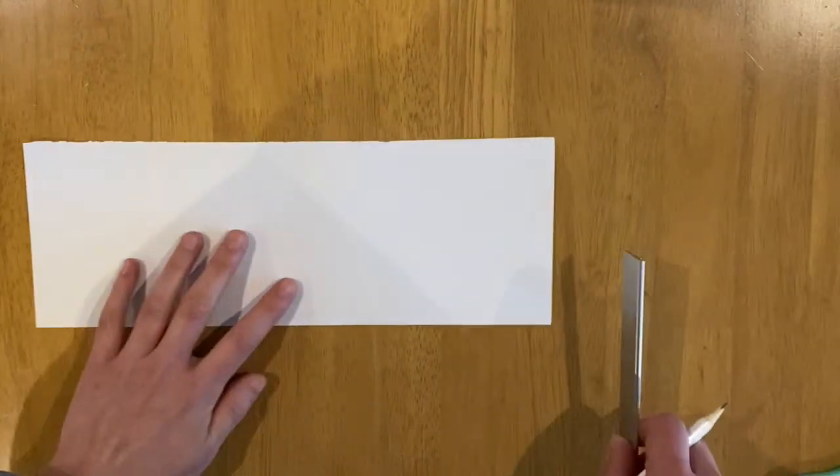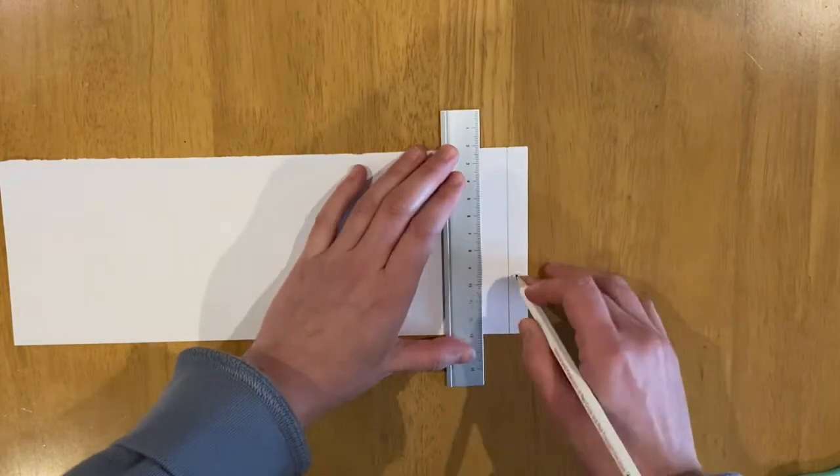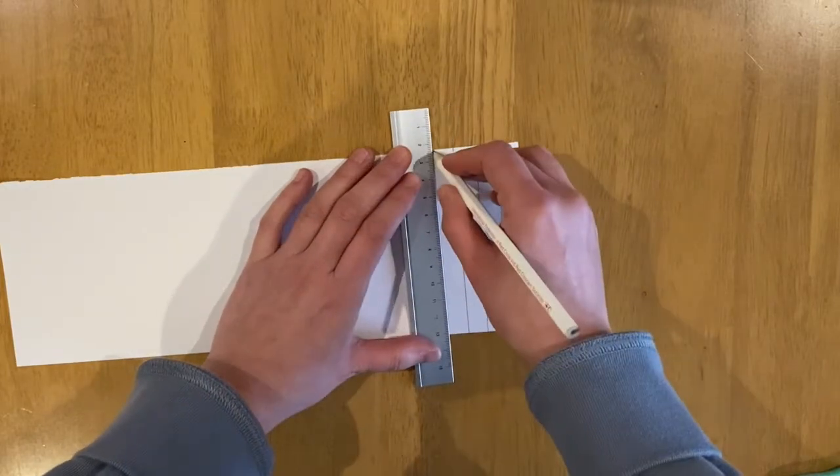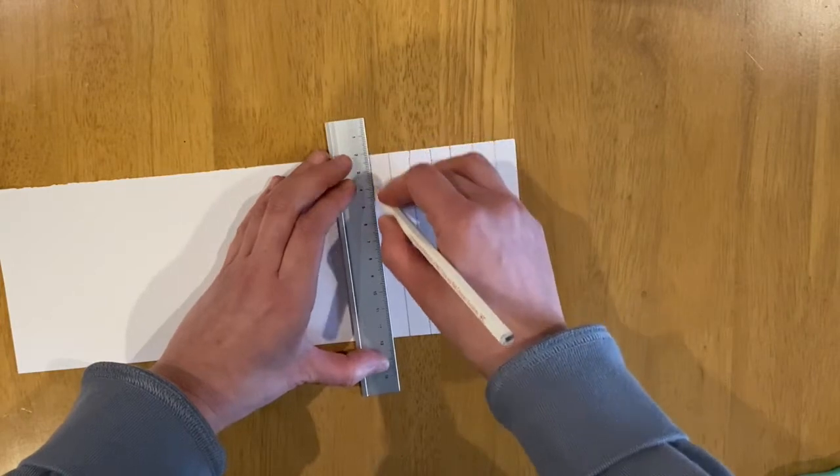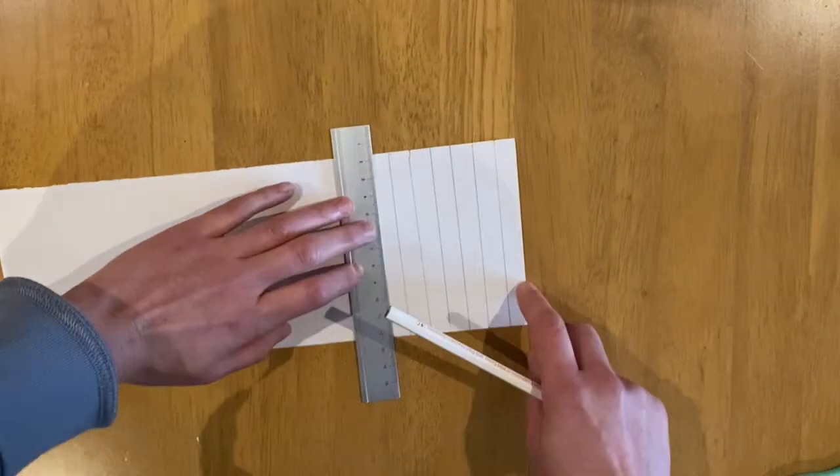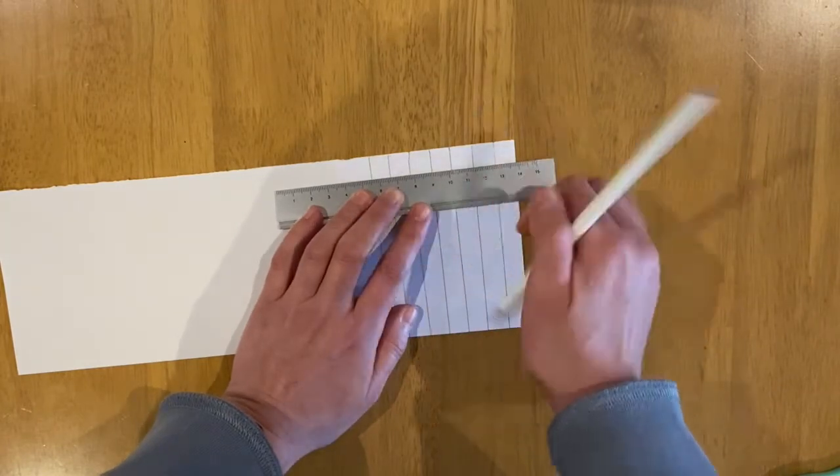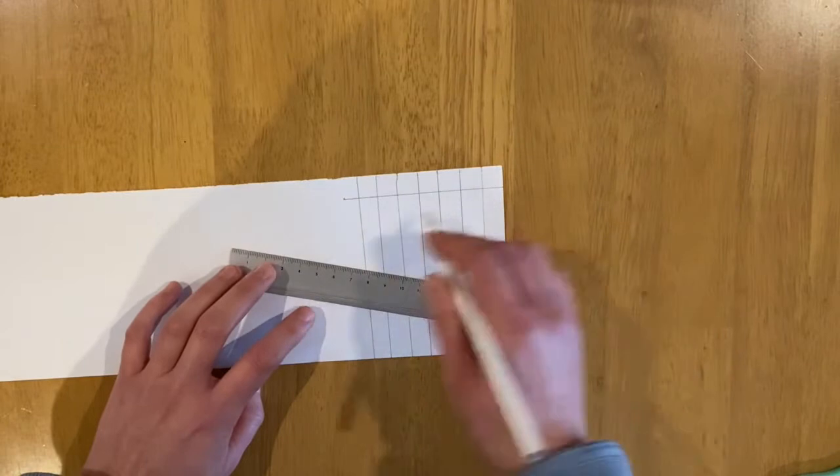So to make the ones deans it's quite similar to making the tens except you have to cut little squares out. So just draw some lines going downwards and then get your ruler or your straight thing and then go the other way so that you can have lines going up and down and then side to side.